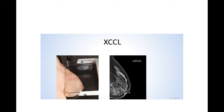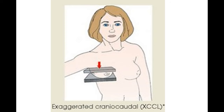The laterally exaggerated cranio-caudal view is used to image the lateral side of the breast, particularly when the breast tissue is too large. In this view, the image detector and x-ray tube system are placed on the lateral side of the breast so that the lateral part is properly visualized at the expense of the medial side. Similarly, the medially exaggerated cranio-caudal view focuses on the medial side of the breast — the image detector and x-ray tube system are placed on the medial side at the expense of the lateral side.